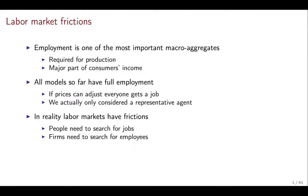In reality, labor markets have frictions. These frictions are going to be what's behind the reason that people need to search. Why can't you just find a job right away? Why do you need to search? The same thing happens to firms — firms need to search for employees. So we're going to have a model where these search frictions are at the center of it, preventing all firms from hiring and all workers from finding a job.